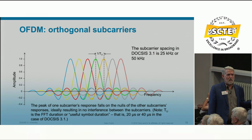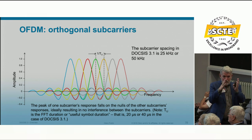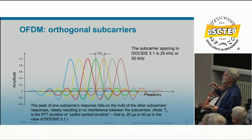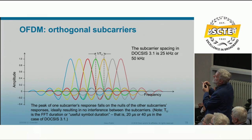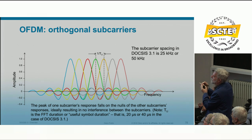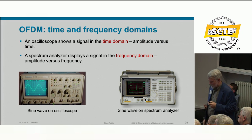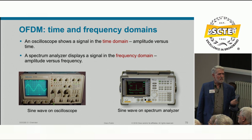In the frequency domain, the peak of one subcarrier lines up with the nulls of the other subcarriers — this is why they don't interfere. In the time domain, looking at a 20 or 40 microsecond symbol window, the lowest-frequency subcarrier has one cycle, the next has two, and so on — exactly integer numbers. As long as these relationships are maintained, there is orthogonality and no interference. This tells us that frequency and phase of these subcarriers are extremely critical — any drift destroys orthogonality.